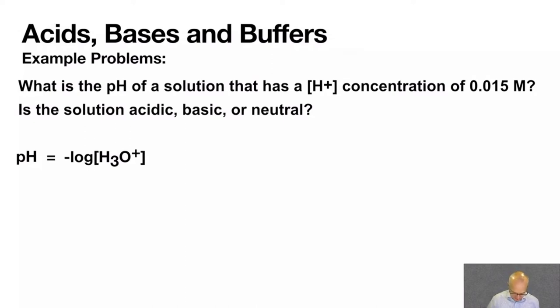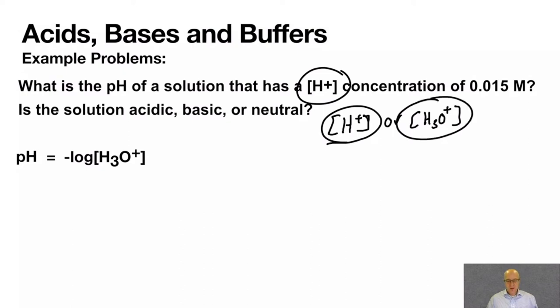First thing we have to address is this. Depending on the book you're reading, some books will say H plus or H3O plus. They're saying the same thing. So if you see H plus or hydronium in the square brackets, they're saying the same thing. They're saying the concentration of hydronium. So in this example, the concentration of hydronium is 0.015 molar.